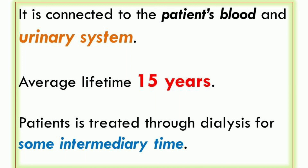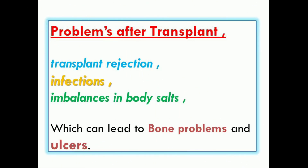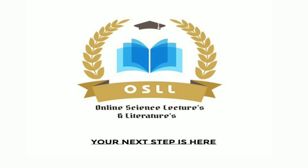اگر یہ transplant fail ہو جائے تو patient کو دوسرا kidney بھی transplant کرنا پڑتا ہے، اور اس حالت میں مریض کو دوبارہ dialysis سے گزارا جاتا ہے۔ Transplant کے بعد imbalance ہو سکتا ہے جو bone problems and ulcer کا سبب بن سکتا ہے۔ یہ تھا kidney transplant method۔